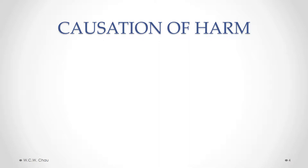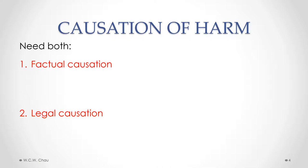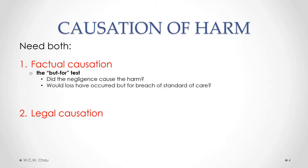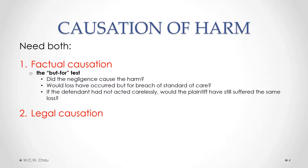To hold someone liable for negligence, the third element — causation of harm — must be shown. Causation of harm involves two different types of causation: factual causation and legal causation. The plaintiff needs to show both types. Factual causation is determined by applying the so-called but-for test. Another way of phrasing it is: did the negligence actually cause the harm? Would the loss have occurred but for the breach of the standard of care? If the defendant had not acted carelessly, would the plaintiff have still suffered the same loss? We need to find some factual connection that the negligence caused the loss or injury being complained about.